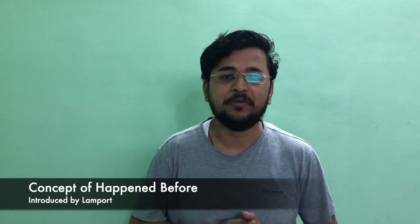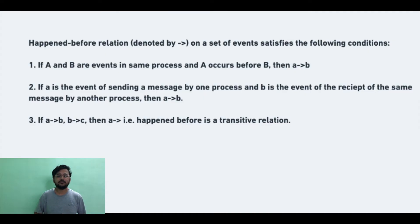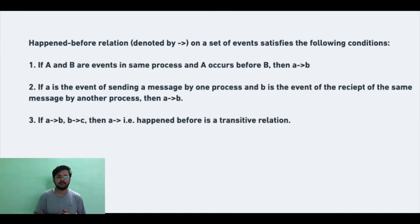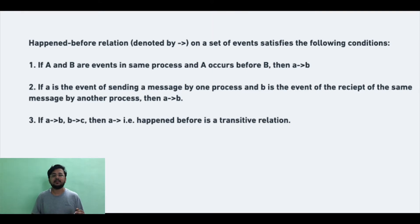This is where Lamport introduced the concept of 'happened-before.' If there are two events in the same process — A and B — and A happens before B, then we can say there is a happened-before relation between A and B. Consider it this way: if there are two events A and B within the same process that happen at time T1 and T2, and because they are in the same process we know that T1 is less than T2, then we can say there is a happened-before relation between A and B.